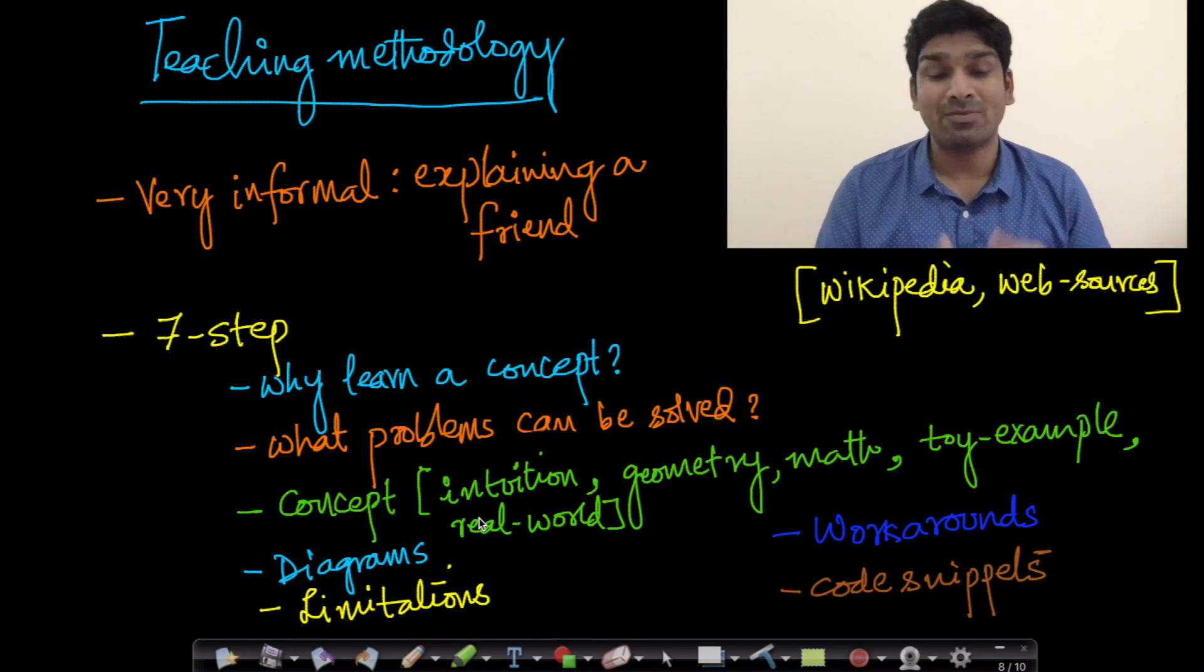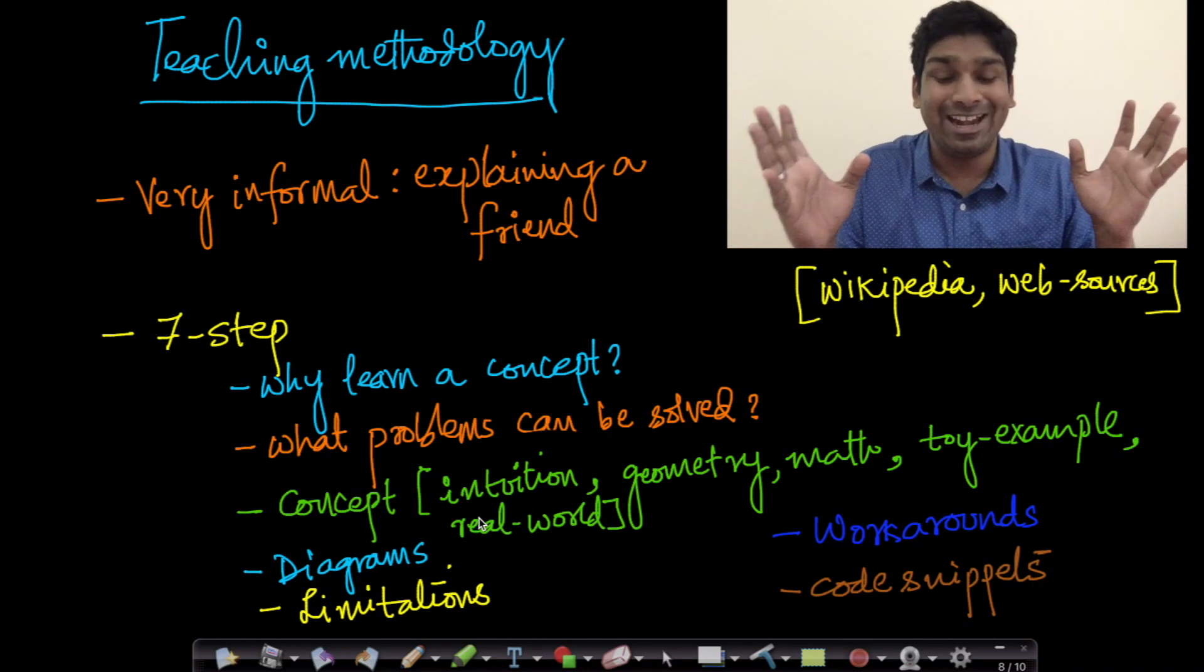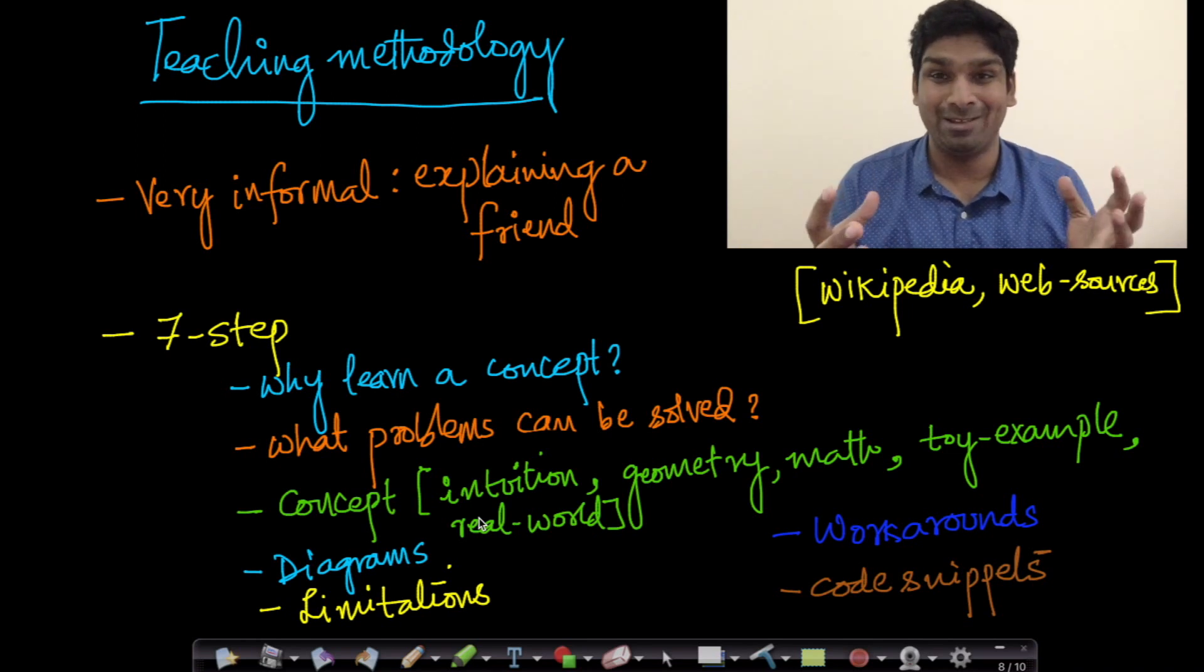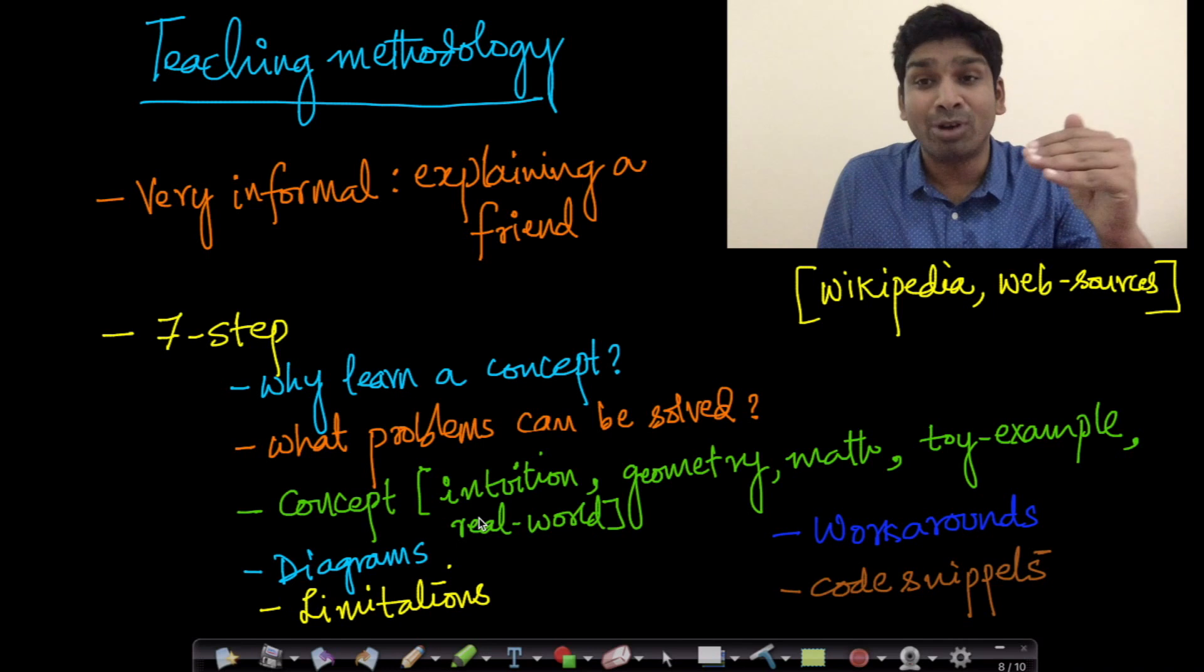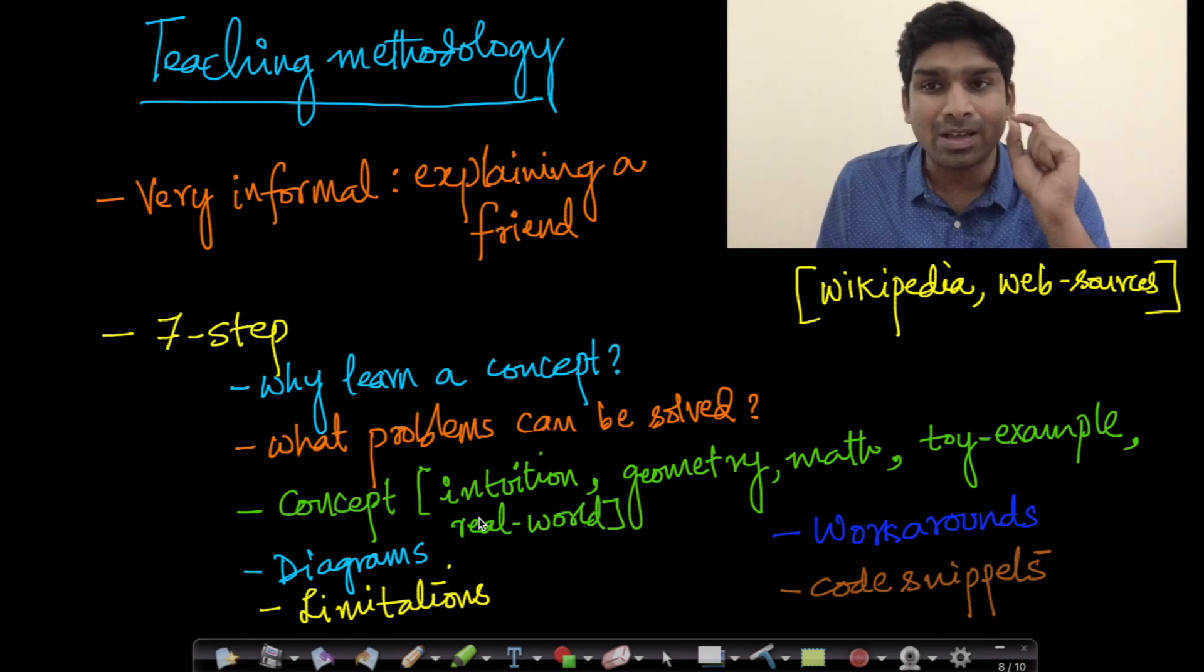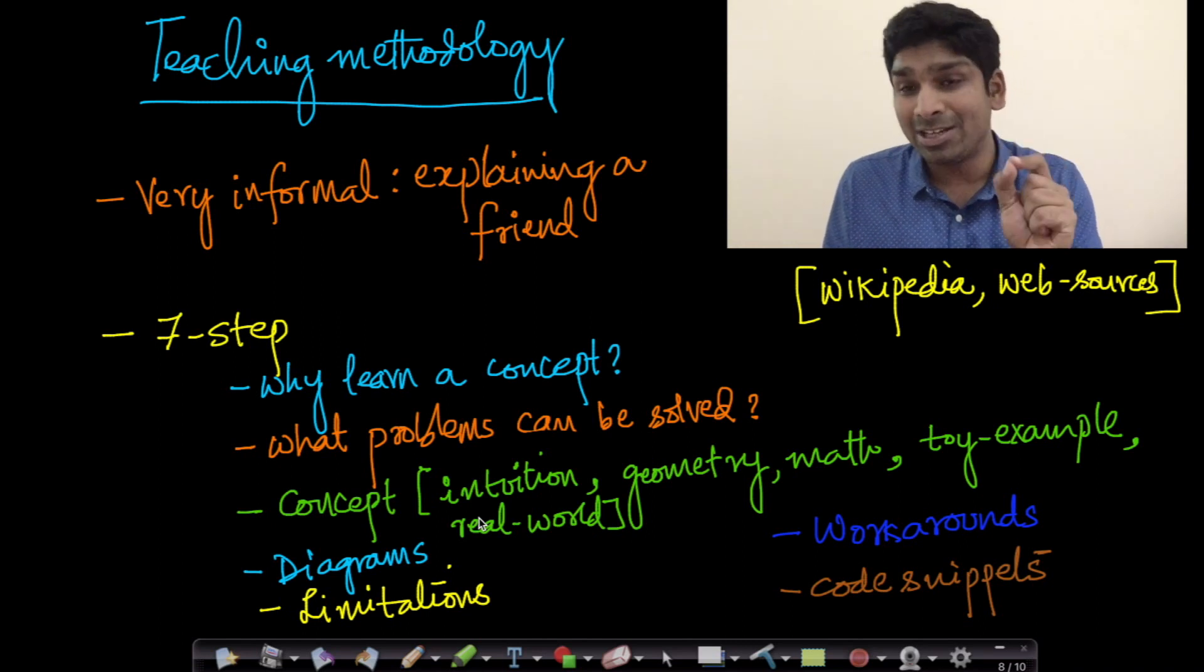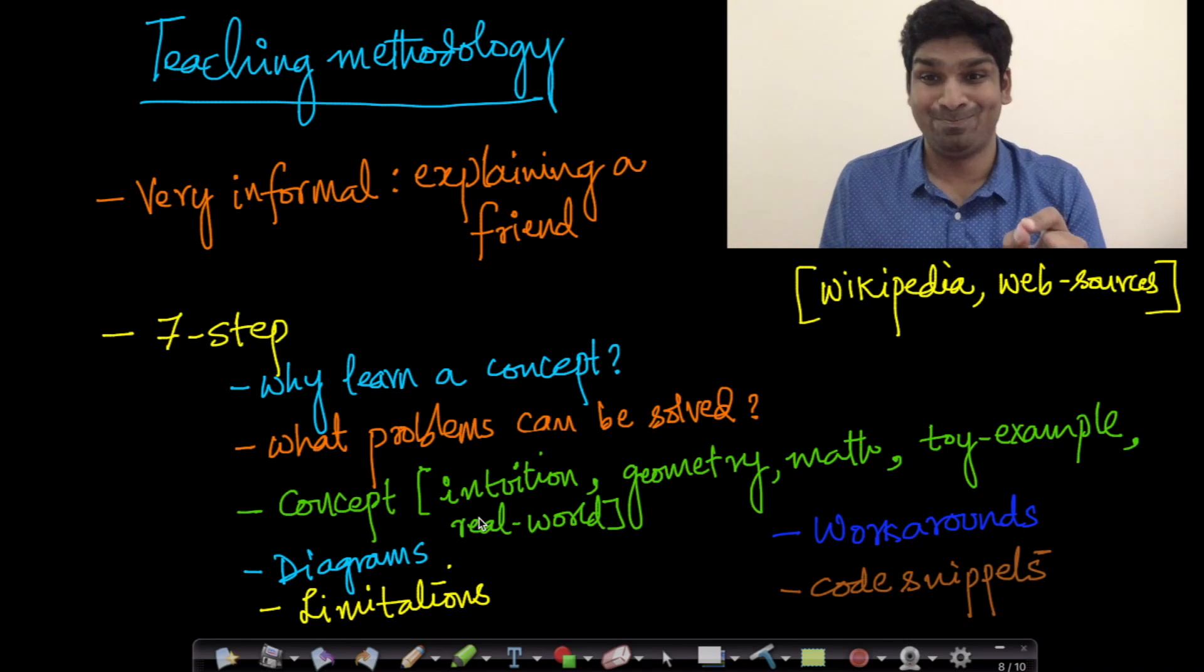Thankfully, most of AI and machine learning has tons of geometric intuition. Hence, we can draw diagrams to show you what's happening. For every concept, it's important for us to learn and know what the limitations are. Where would this concept or technique not work? Because to solve real world problems, in addition to knowing what the concept is and what problems can be solved, we also have to understand what it cannot solve. Only by knowing that, you would not misapply it.